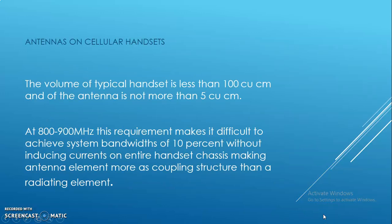The antennas on cellular handsets: the volume of a typical handset is less than 100 cubic centimeters, and that of the antenna is not more than 5 cubic centimeters. At 800 to 900 megahertz, this requirement makes it difficult to achieve system bandwidths of 10 percent.